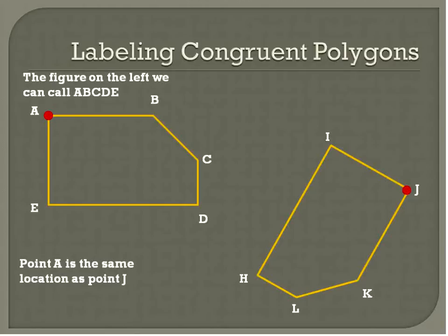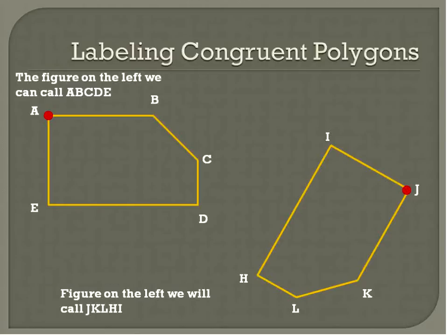So the way that we correctly label congruent polygons is that we would give, start at a certain point. And for this, we're going to say A is the point that we're starting with because that's where we started labeling this figure. We called it A, B, C, D, E. We're going to start with point A. A corresponds with point J on our second figure. It's the same spot there. So we would say that those two points correspond. So when we start labeling this or naming this polygon over here, what we're going to do is start at the same point and go in the same order.